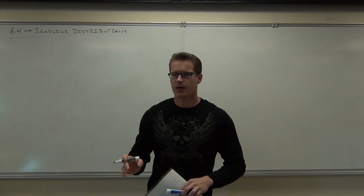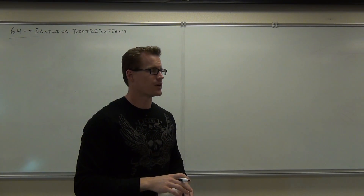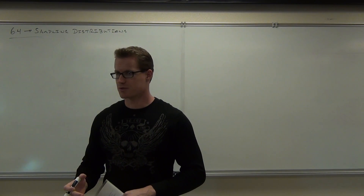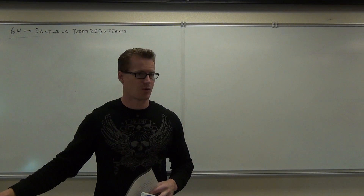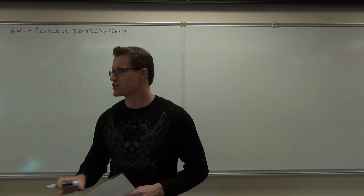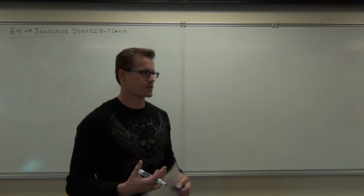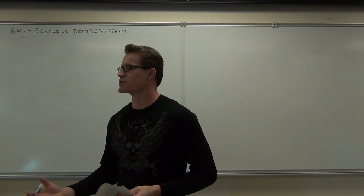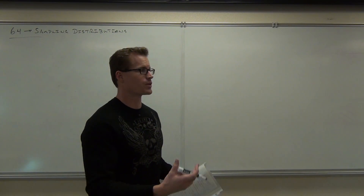Here's the idea. In every other section we've covered so far in both chapter 5 and chapter 6 up to this point, you have been dealing with populations. Notice how you've been writing mu and sigma for all of your homework, signifying that we've been dealing with entire populations of people. We don't always deal with populations in this class. It's very hard to know everything about an entire population, so we deal with the sample instead.